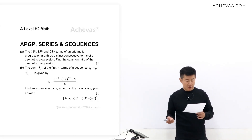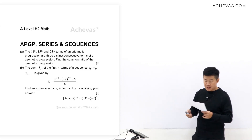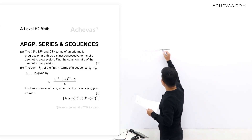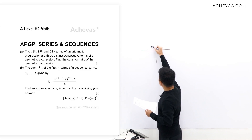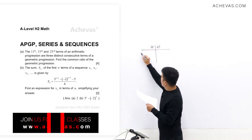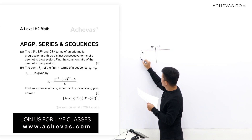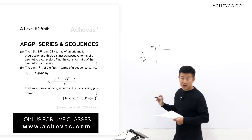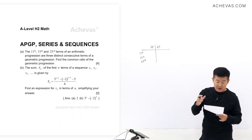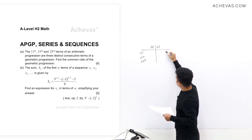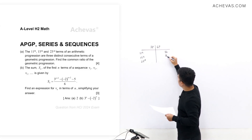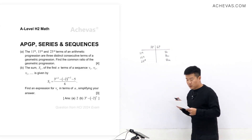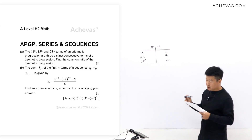Part A is an AP-GP question. We have an AP that is going to be matched to a GP. According to the question, the 11th term, the 15th term, and the 23rd term of the AP are going to match consecutive terms of the GP. So for example, let's say the terms are U_r, U_(r+1), and U_(r+2).